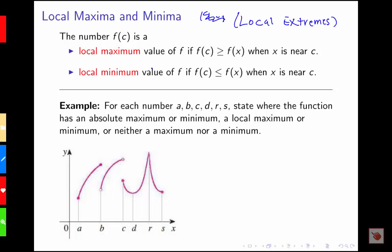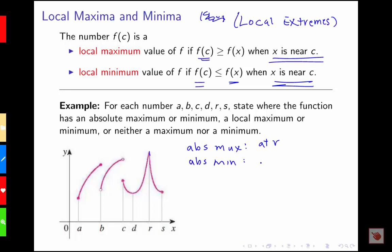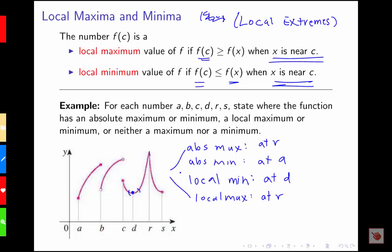We call a number f of c our local max if that value is greater than or equal to all of our y values near the point we're looking at, and a local min if our value is less than all y values near our point. Going back to our example, we had an absolute max at r and an absolute min at a. Looking at local extremes, I've got a local min at d, because on a small interval around d, f of d is smaller than everything nearby. Also, r is both an absolute max and a local max at the same time.